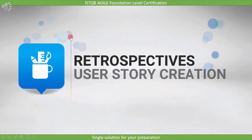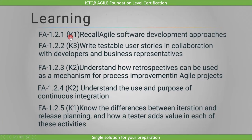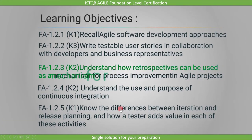In this lecture, we will cover retrospectives. The learning objective here is to understand how retrospectives can be used as a mechanism for process improvement in agile projects. This is marked as K2.